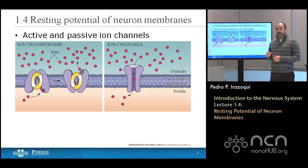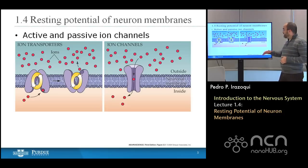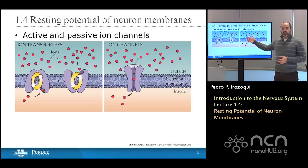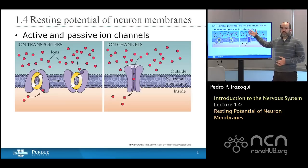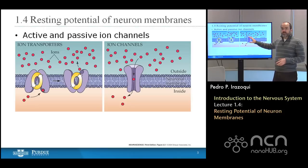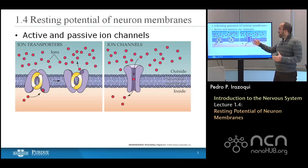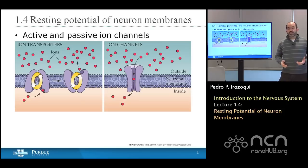A neuronal membrane is like a skin between the outside of the cell and the inside of the cell. That skin is made of a phospholipid bilayer, and it serves to isolate the environment inside the cell from the environment outside the cell. So you can have ions and neurotransmitters and structures inside the cell which will not interact with the outside of the cell unless they're allowed to do so.